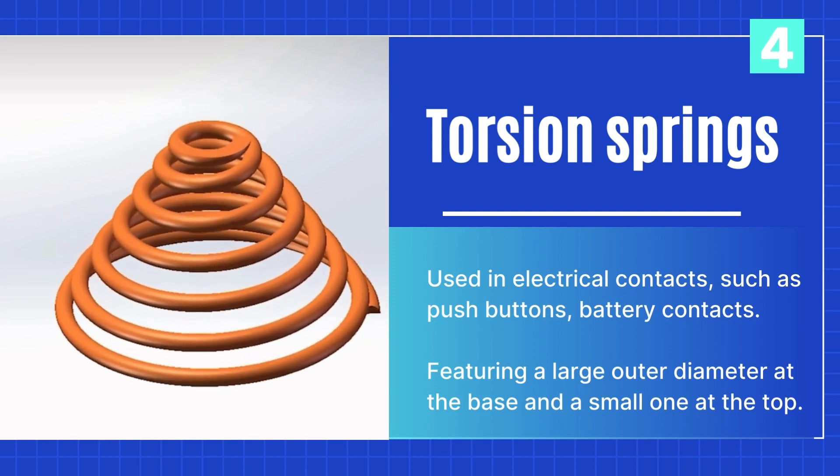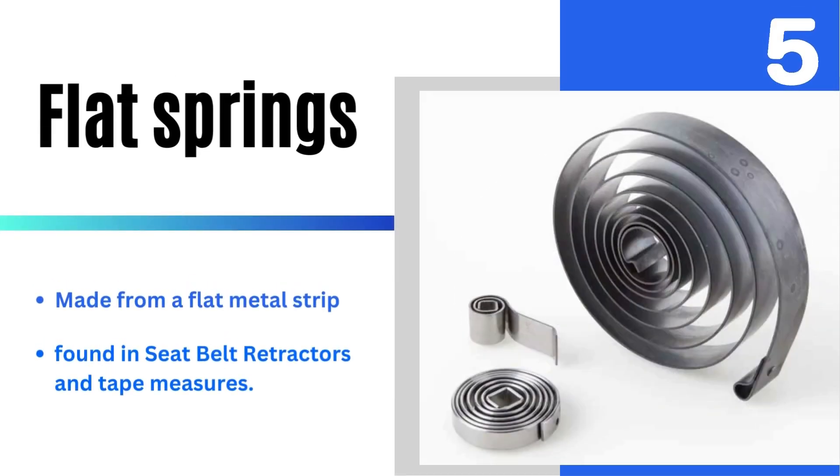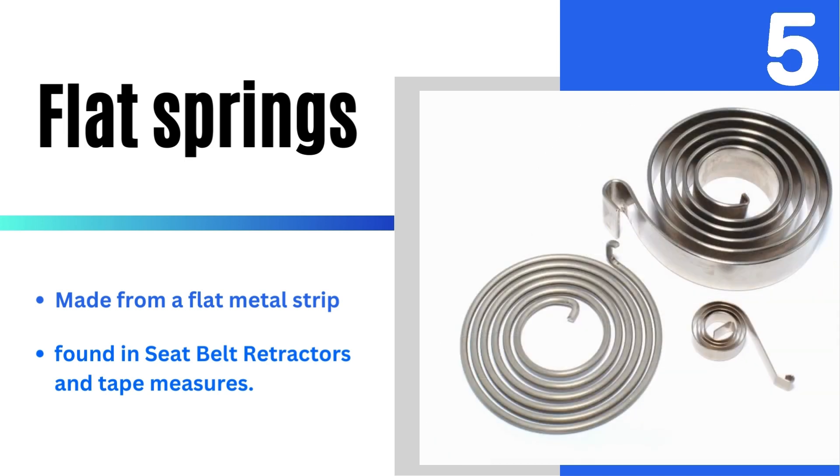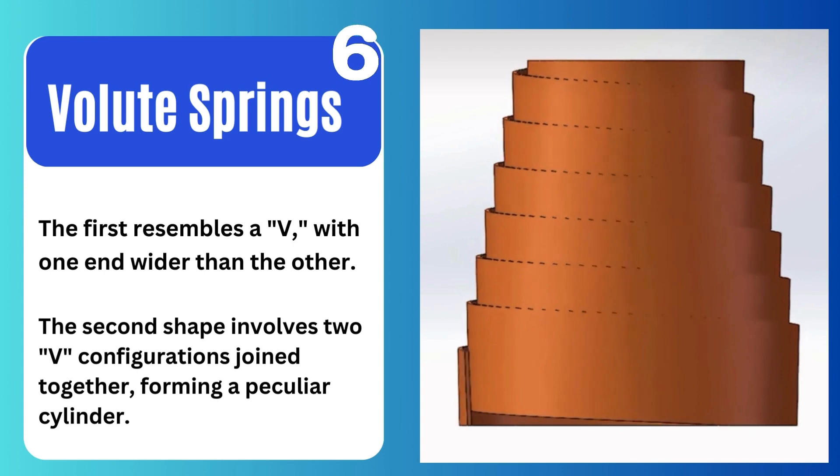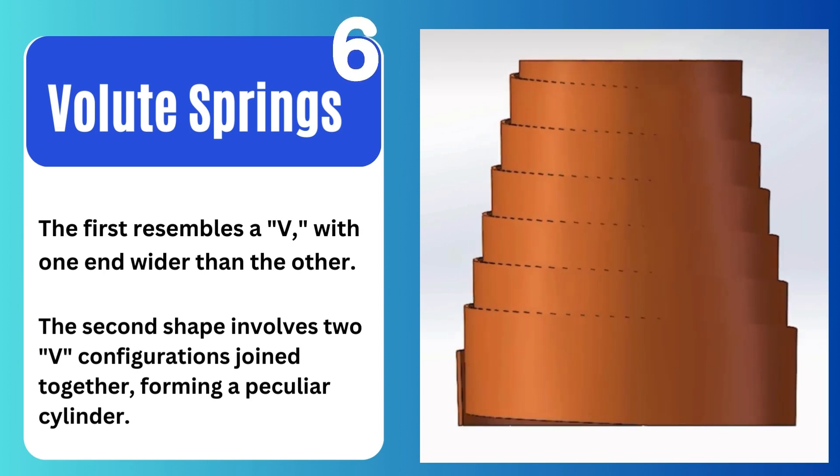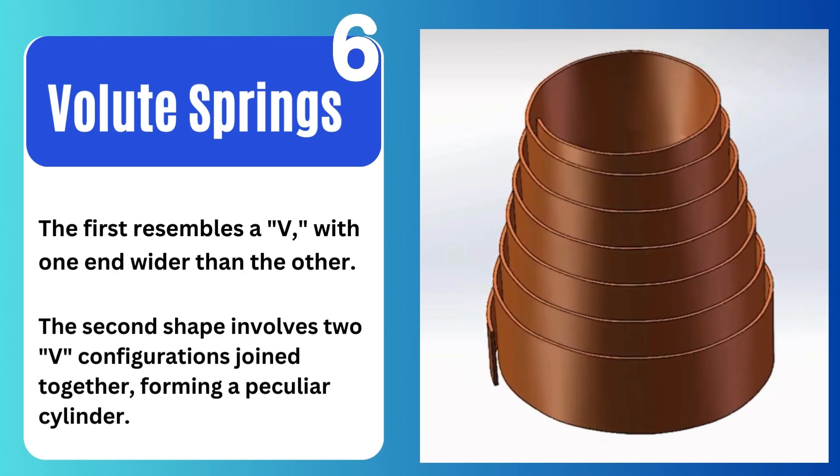Featuring a large outer diameter at the base and a small one at the top, conical springs compress more than helical springs and are used in electrical contacts. Although not an actual spiral, flat springs are often categorized with them, made from a strip of metal bent into a spring shape. Volute springs, with their distinctive shape that resembles the shell of a volute or conch, have two typical types: a V, and the second shape involves two V configurations joined together.